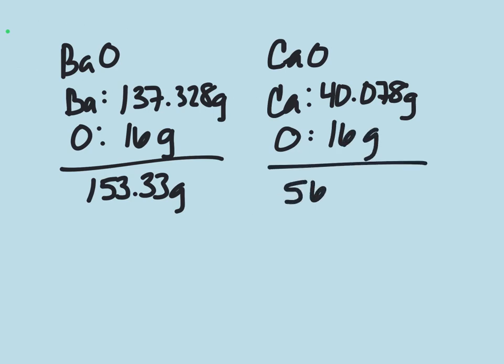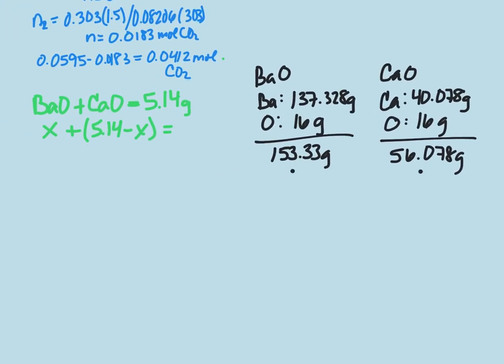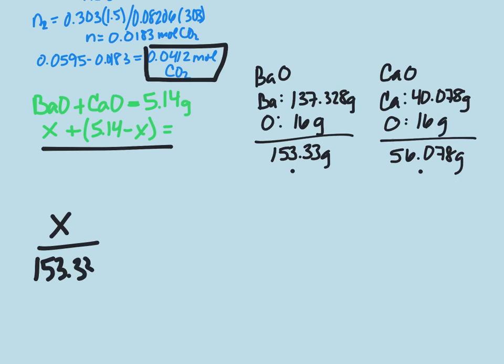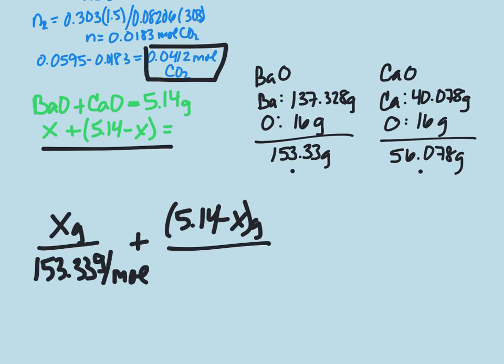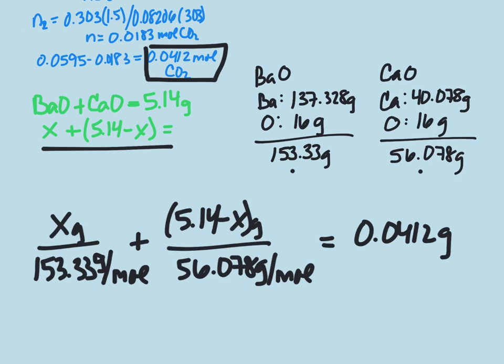We can now take these two values and use it to get molar masses and make it equal to the moles of carbon dioxide used. So in this case, if barium is X, so it's X grams divided by 153.33 grams per mole, plus 5.14 minus X grams divided by 56.078 grams per mole equals the 0.0412 moles of CO2 that was used.